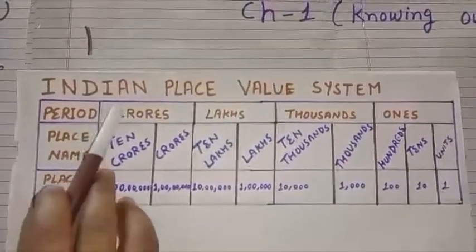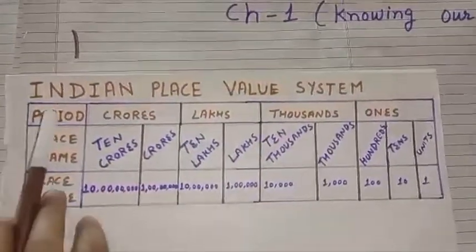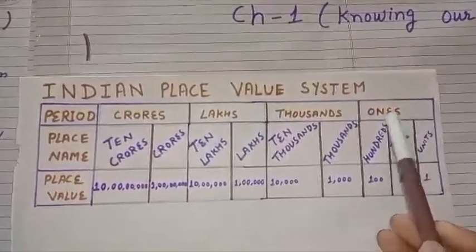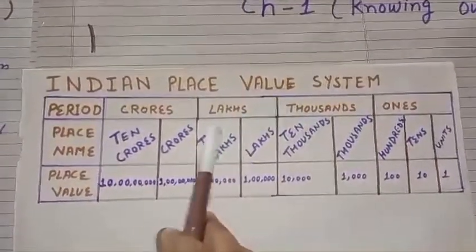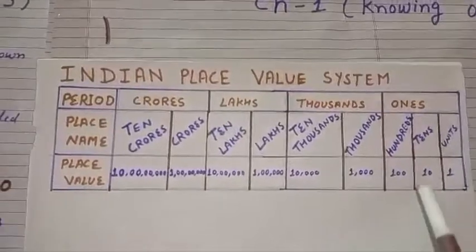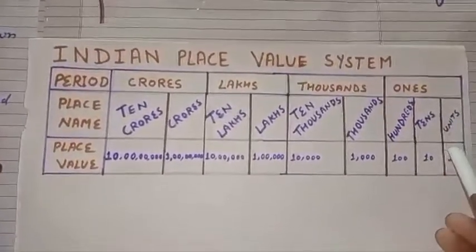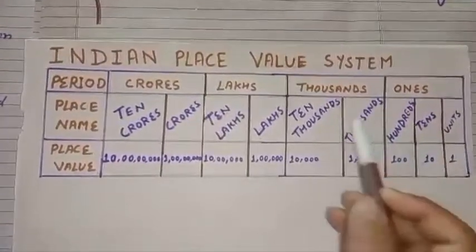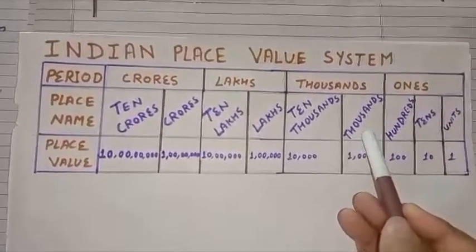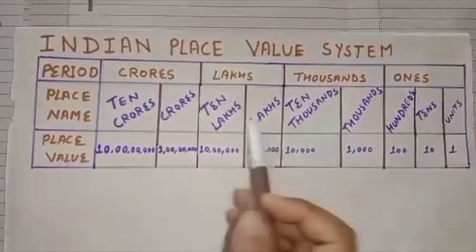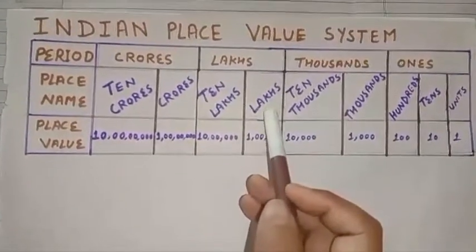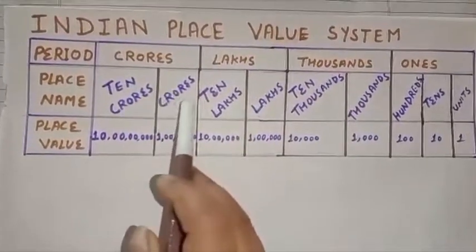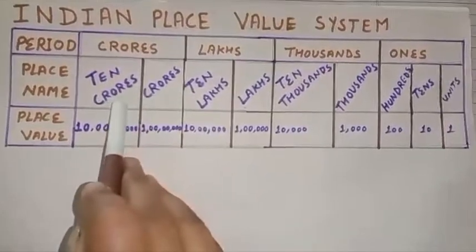In the Indian place value system, the groups are: ones, thousands, lakhs, and crores. In the ones group there are three places: units, tens, and hundreds. In the thousands group there are two places: thousands and ten-thousands. In the lakhs group: lakhs and ten-lakhs. In the crores group: crores and ten-crores.